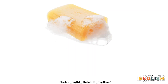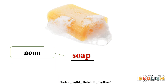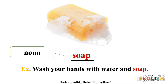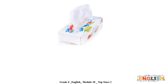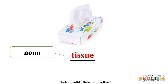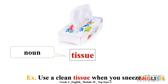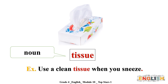Word number three is: soap. The word soap is a noun, as in: wash your hands with water and soap. The last one is: tissue. Repeat after me - tissue. Tissue is a noun, as in: use a clean tissue when you sneeze. You did well!